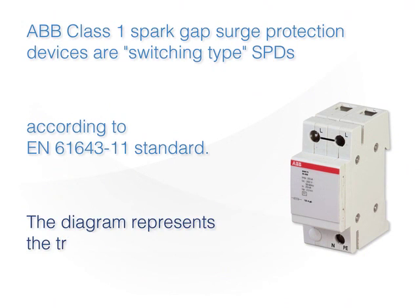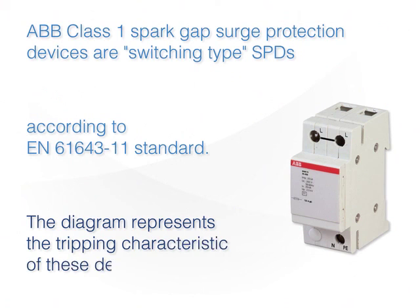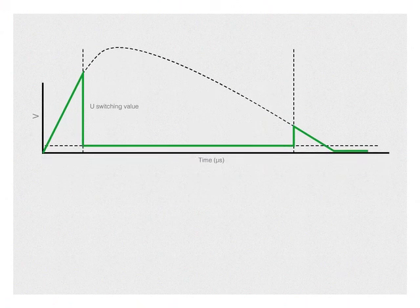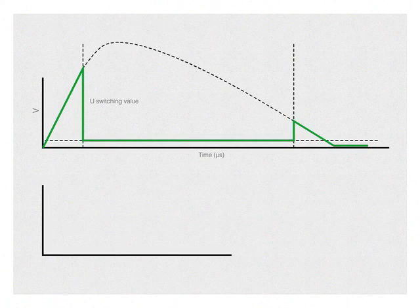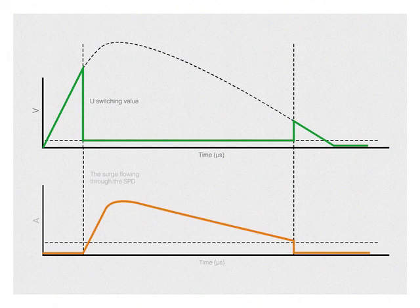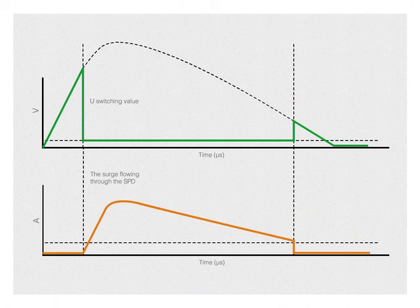The diagram represents the tripping characteristic of these devices. As seen from the figure, at the occurrence of a certain level of overvoltage — the switching value — the voltage across the module collapses suddenly to just a few volts, the value corresponding to the arc voltage. The more rapid the switching process, the more the maximum voltage level across the SPD is reduced, and the less the downstream electrical equipment is solicited.